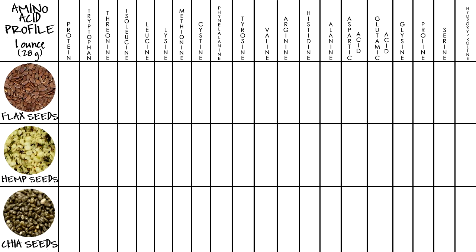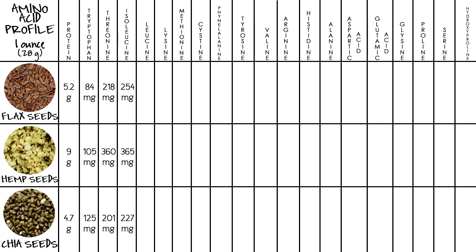Here we are at the amino acid profile. For complete protein: flax seeds 5.2 g, hemp seeds 9 g, chia seeds 4.7 g. For tryptophan: flax seeds 84 mg, hemp seeds 105 mg, chia seeds 125 mg. For threonine: flax seeds 218 mg, hemp seeds 360 mg, chia seeds 201 mg. For isoleucine: flax seeds 254 mg, hemp seeds 365 mg, chia seeds 227 mg. For leucine: flax seeds 351 mg, hemp seeds 614 mg, chia seeds 389 mg.